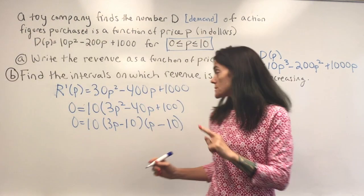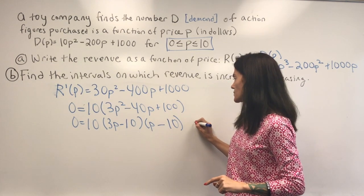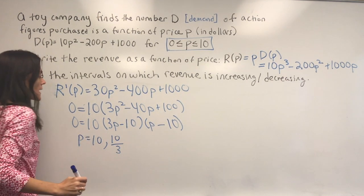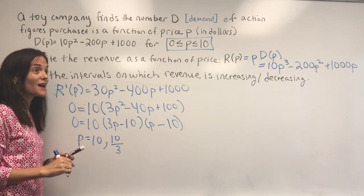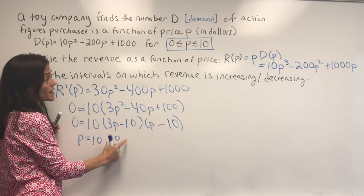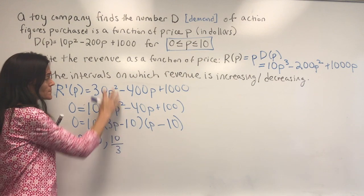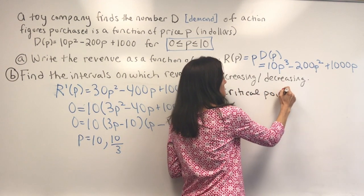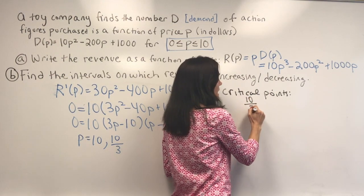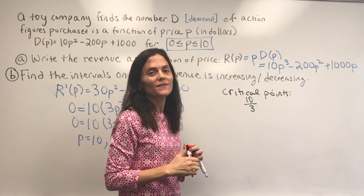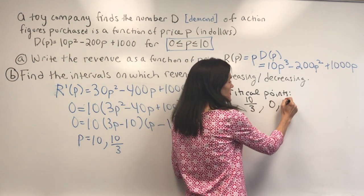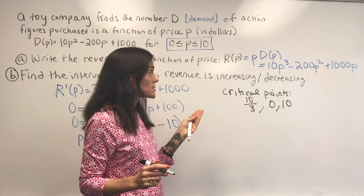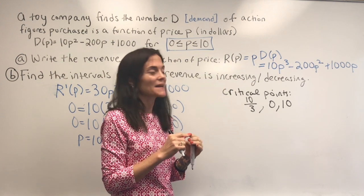We then get two solutions: P equals 10 and P equals 10 over 3. These are not all of our critical numbers, though. Technically, we only take the one in the open interval from 0 to 10 — that's 10/3 — and then we add the endpoints. On a closed interval, the derivative does not exist at the endpoints, but we do consider them critical points for local max, local min, and global max, global min purposes.